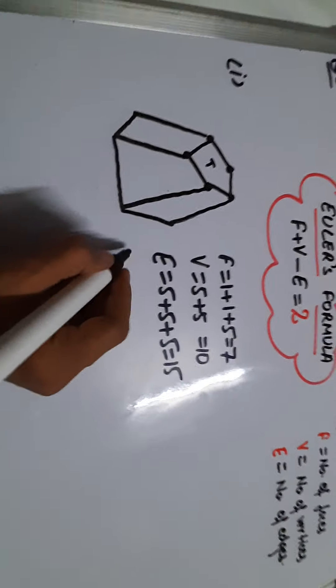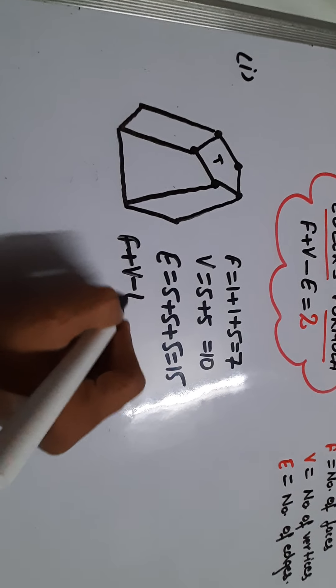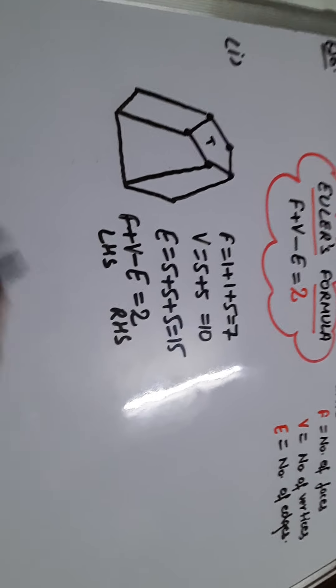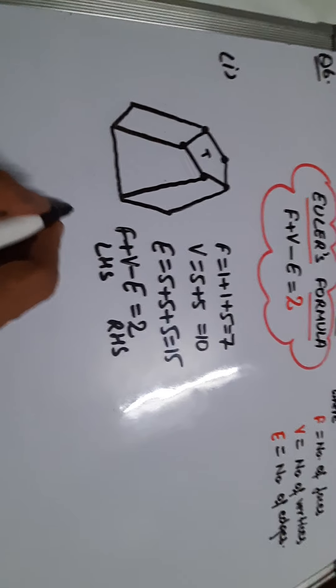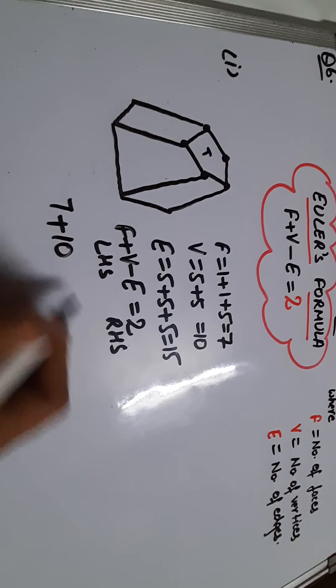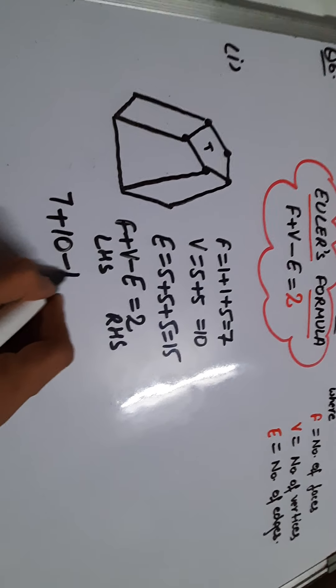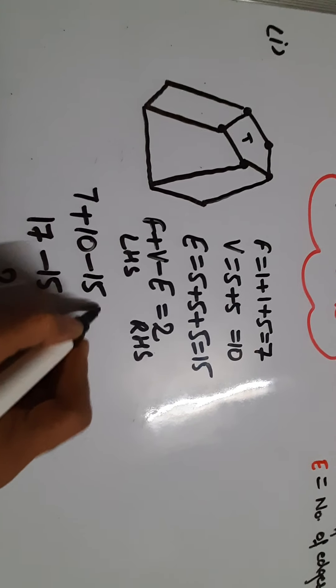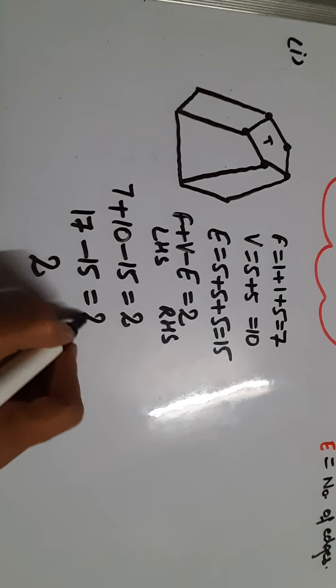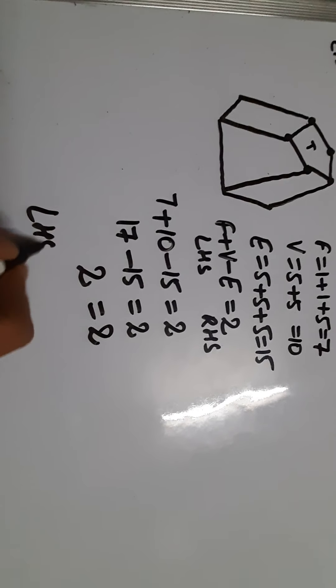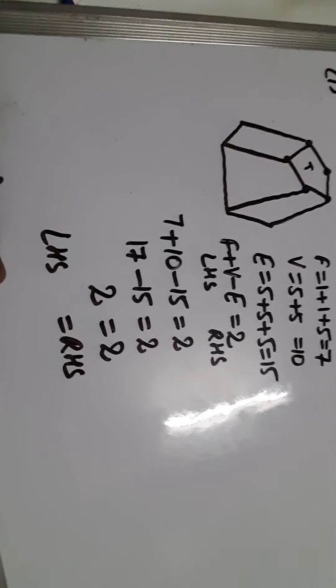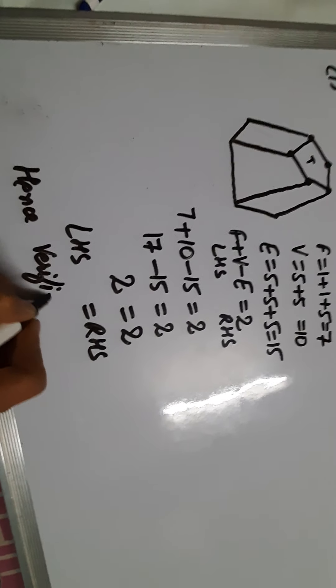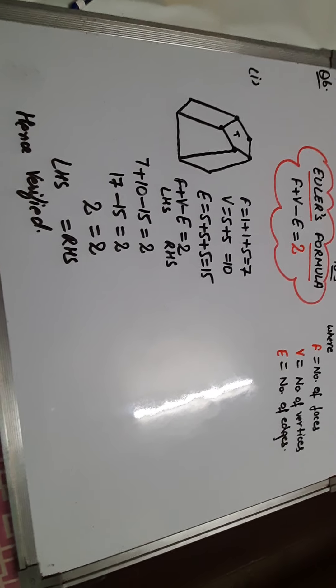Now let us verify the formula. Formula is F plus V minus E is equal to 2. This is our left hand side, this is our right hand side. So left hand side - faces is 7 plus vertices 10 minus edges 15. So 10 plus 7 is 17 minus 15, that is 2. So left hand side is equal to right hand side. Hence verified.